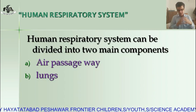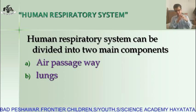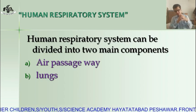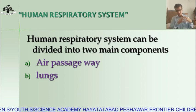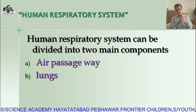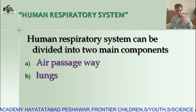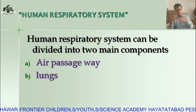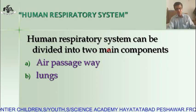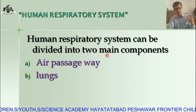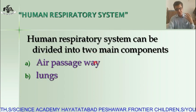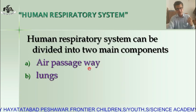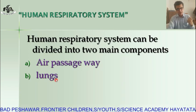Human beings have a well-developed respiratory system that is adapted for the terrestrial mode of life. This system ensures a smooth exchange of gases between the environment and the human body. The human respiratory system can be divided into two main components: the air passageway and the lungs.